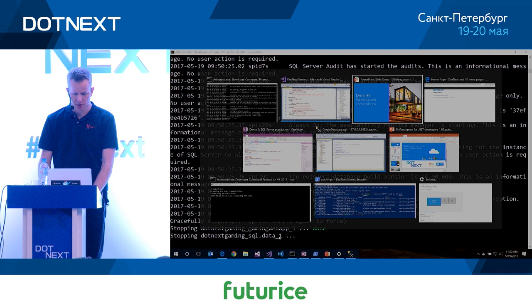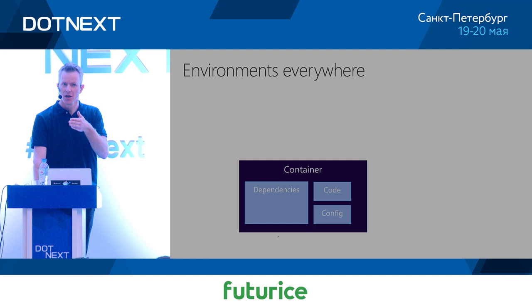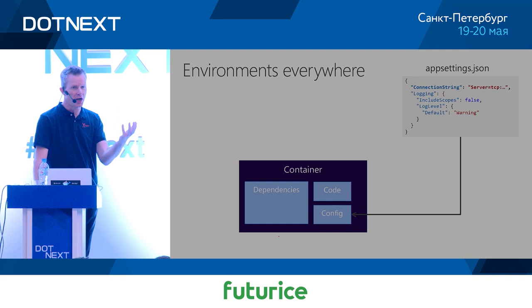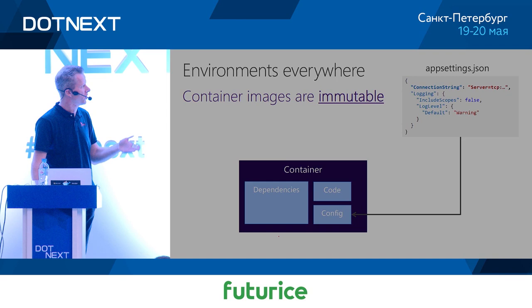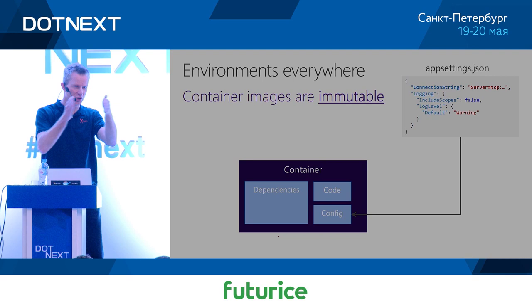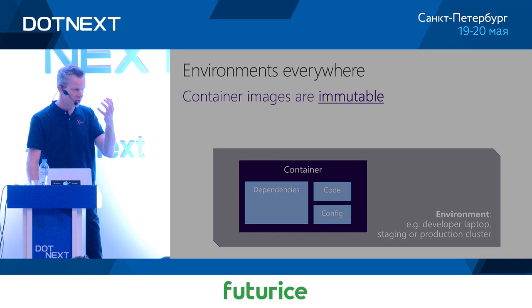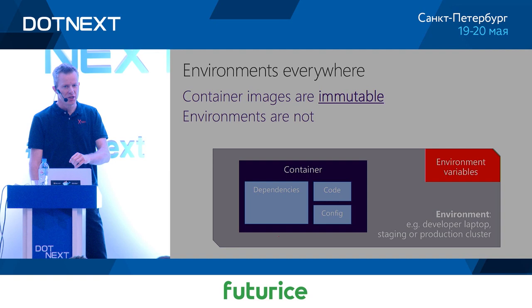An important point: when you build a container it has configuration inside — web.config for ASP.NET applications, appsettings.json for .NET Core. Whatever you have is baked into the image and fixed. You can't change it. But connection strings and IP addresses differ between environments, and container images can't be changed. You need to read environment variables from your environment to know where you're running. Everything that varies between environments must not be hard-coded — you must handle it externally.